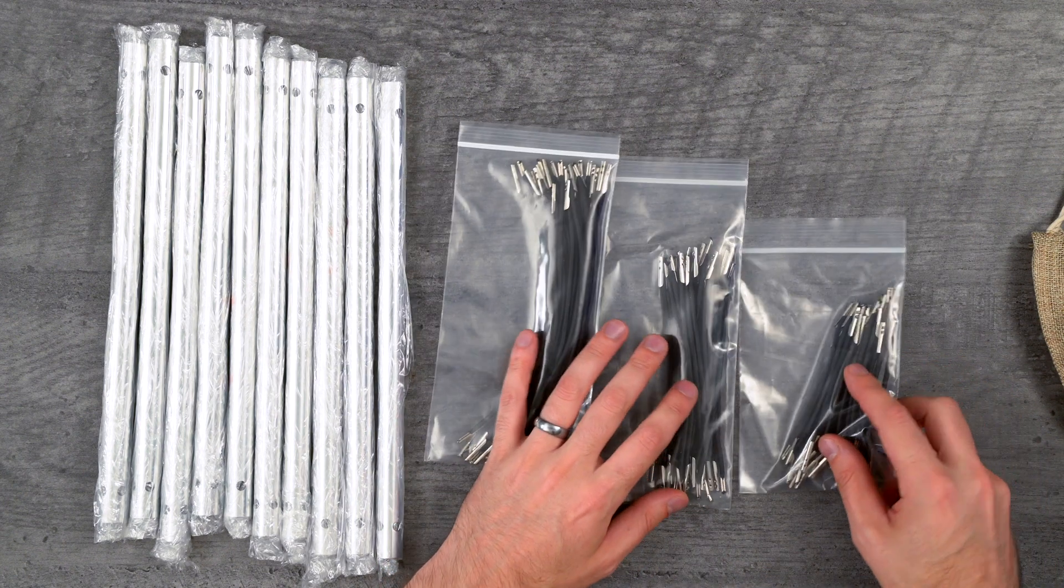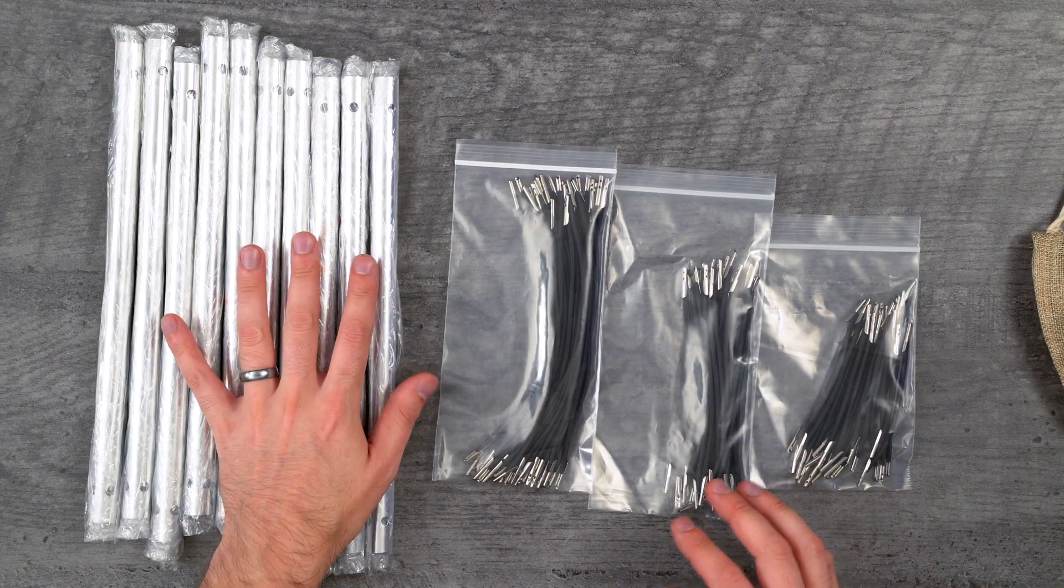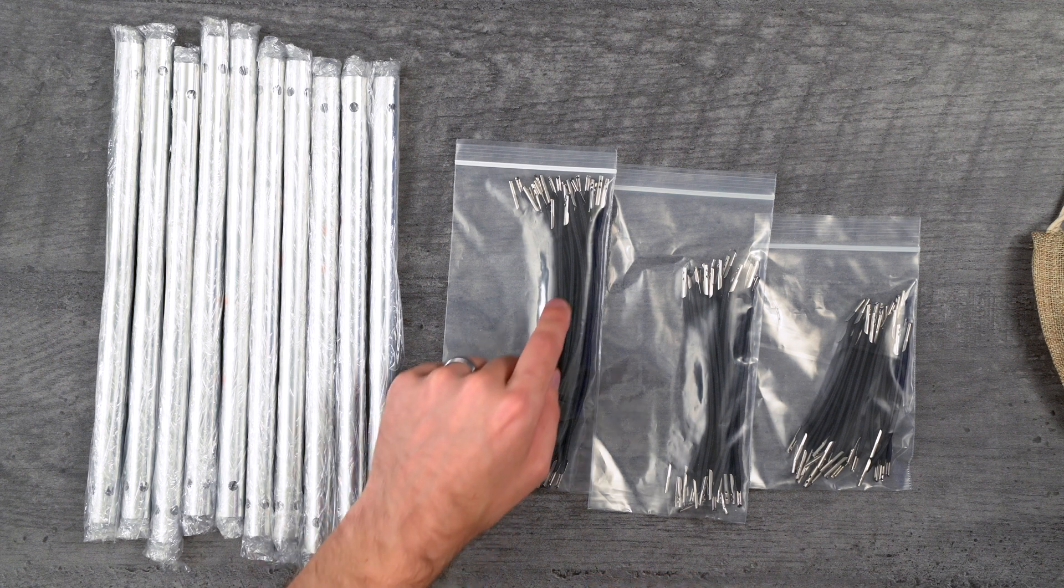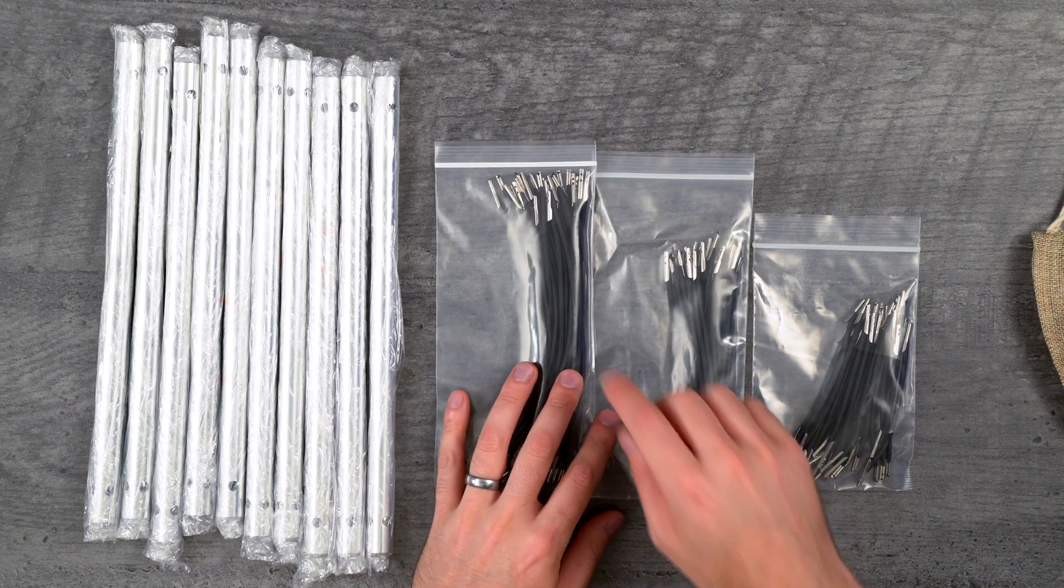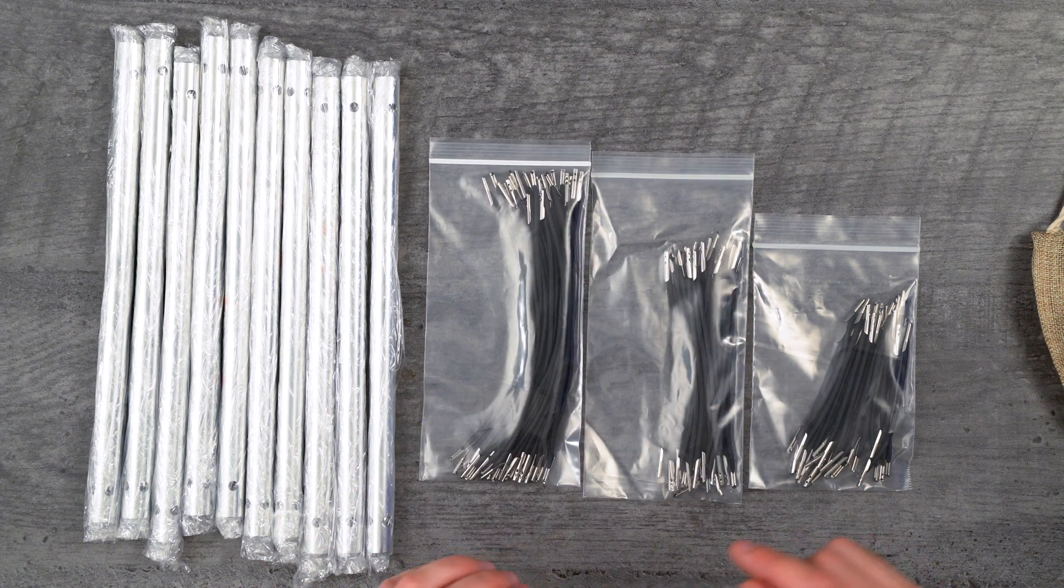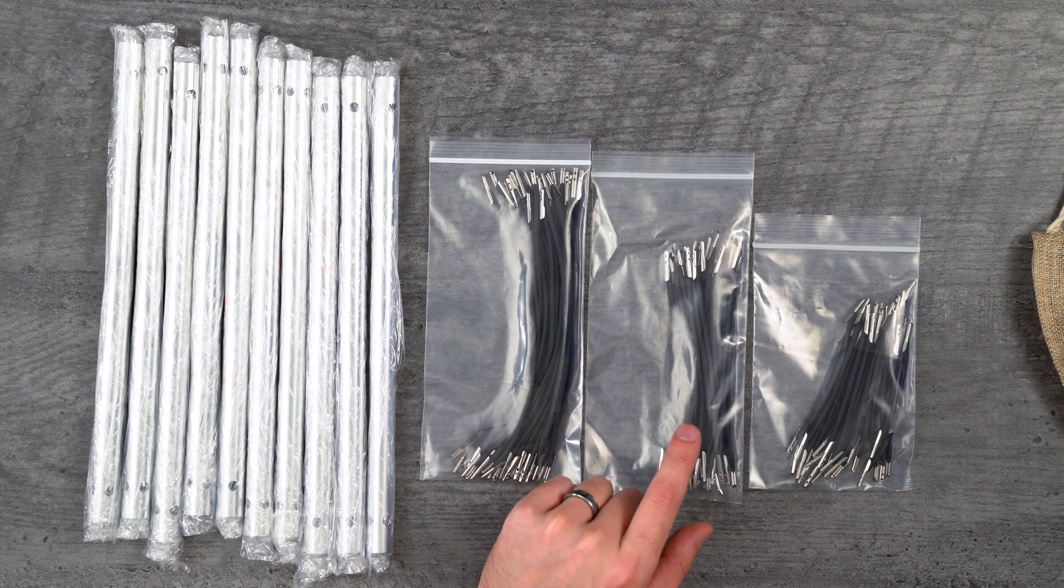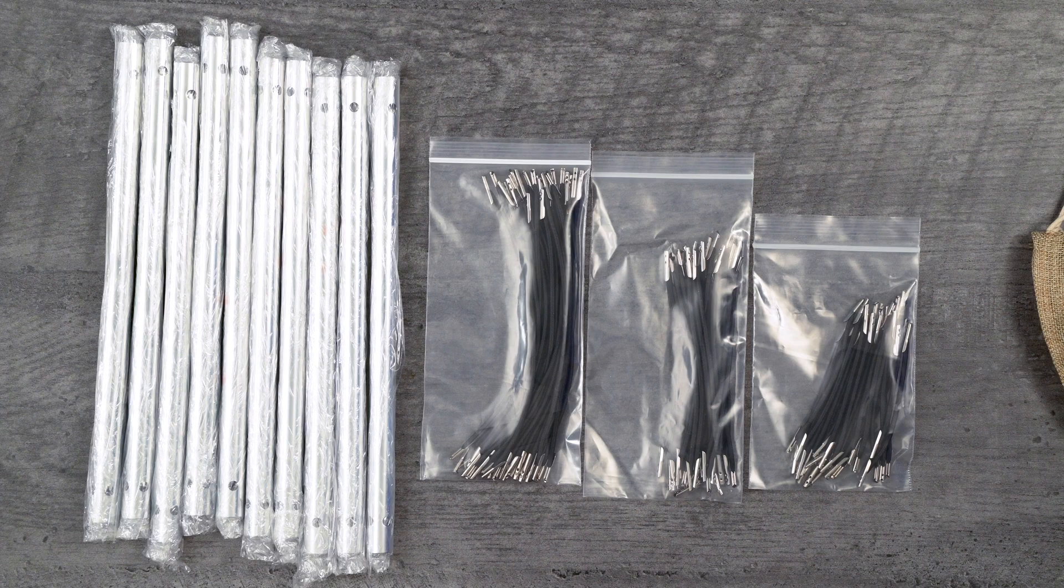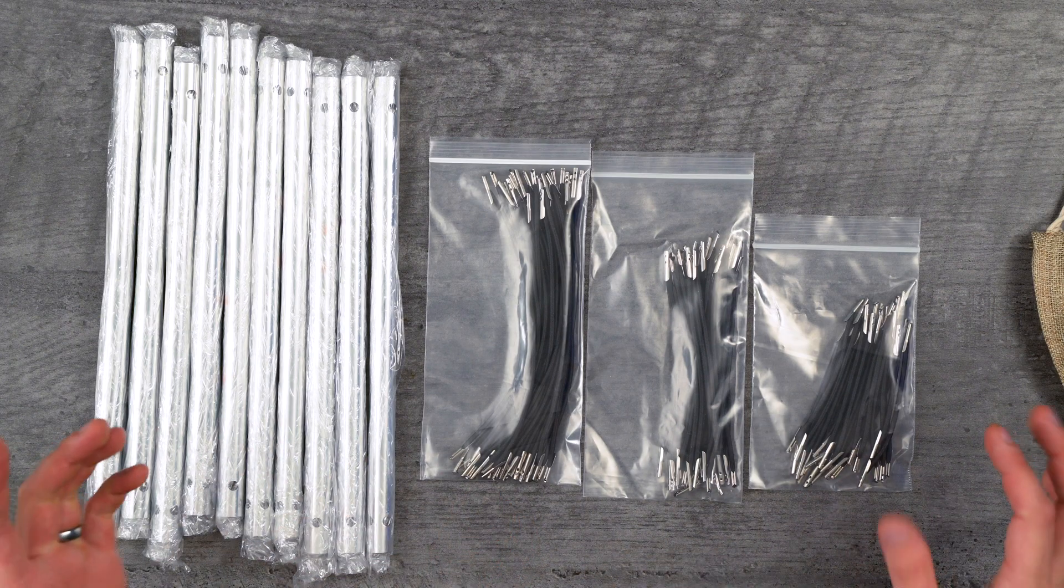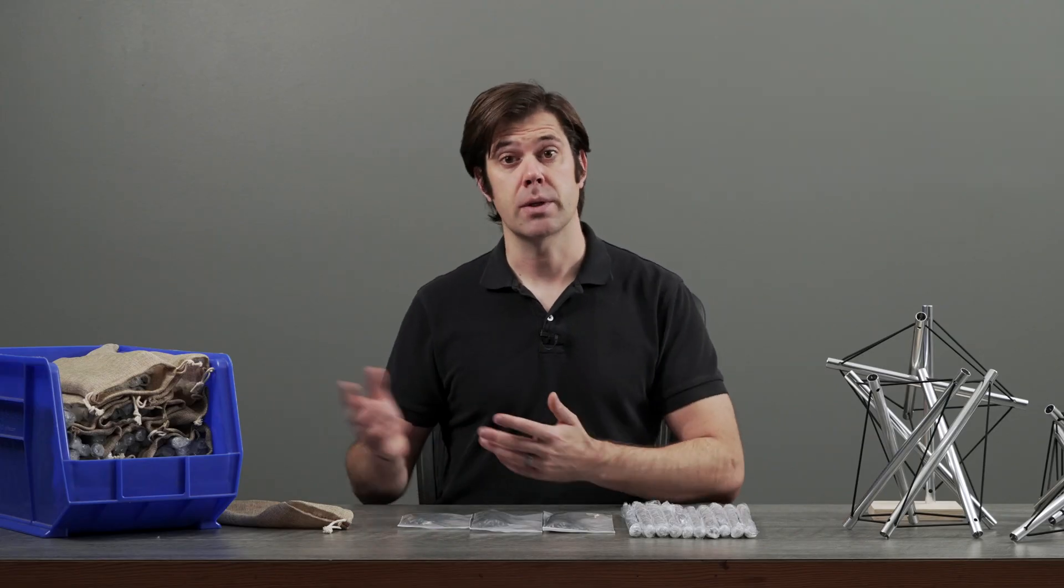There are a variety of struts. Sorry, these are the struts. There are a variety of cords as well. These are shock cord with a barb crimp to each end. There are 25 that are 200 millimeters long, 25 that are 150, and 25 that are 100 millimeters. All this stuff is in each one of these kits.